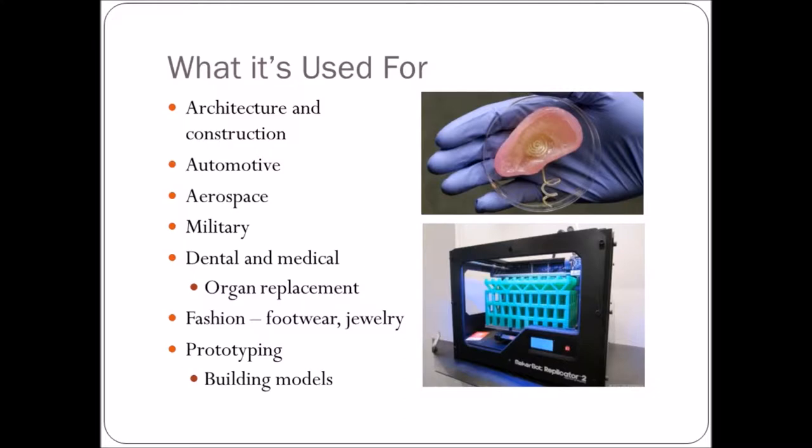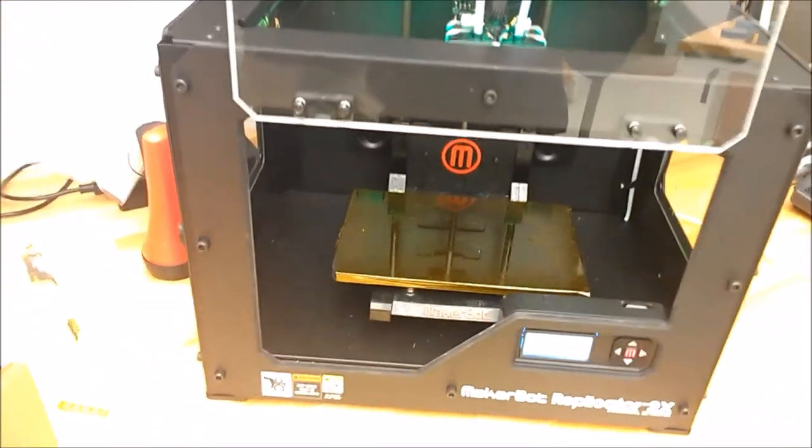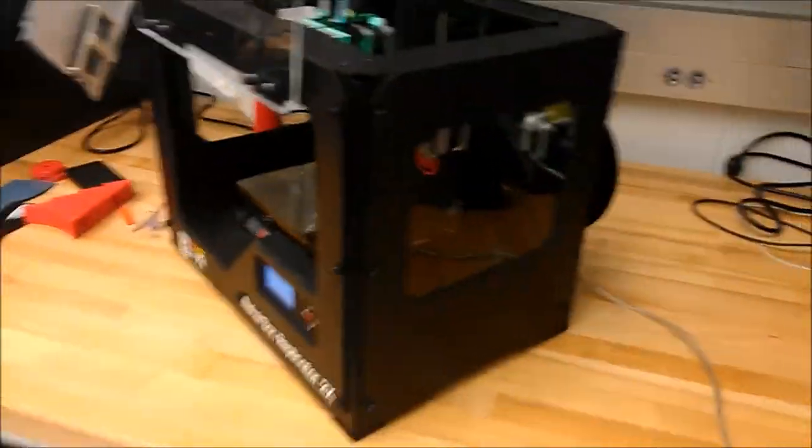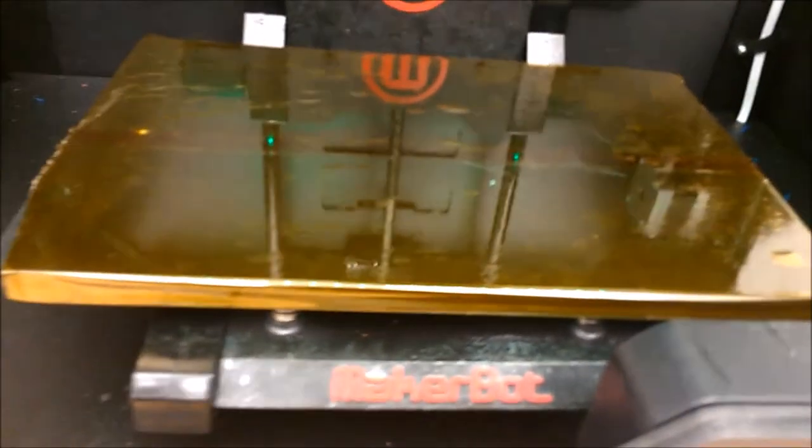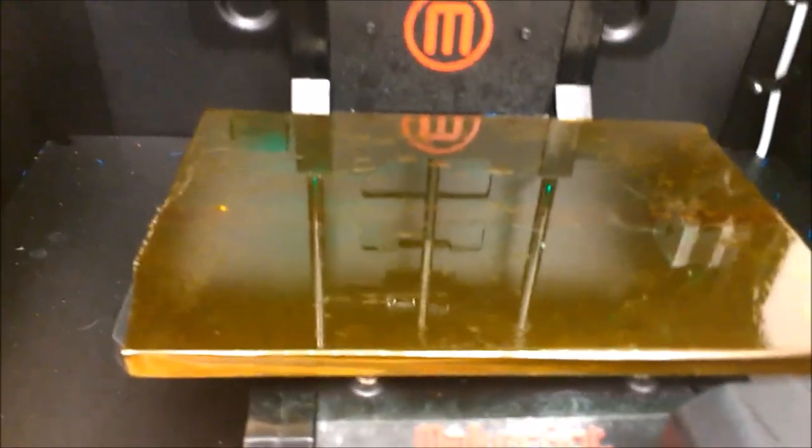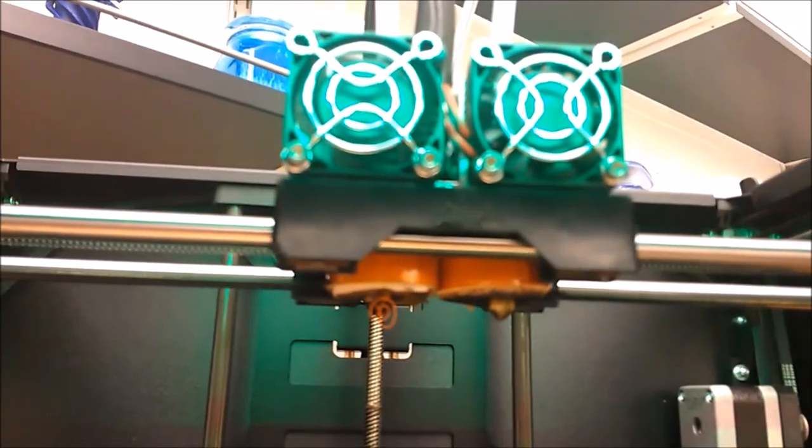We're going to give you a more in-depth look at the MakerBot Replicator 2. This is the basic structure of it, so you can tell it's not too big. We got a control display where we can modify the settings. We got a hot plate that heats up and allows the material to be formed correctly on it. You can see here these are the two extrusion heads.